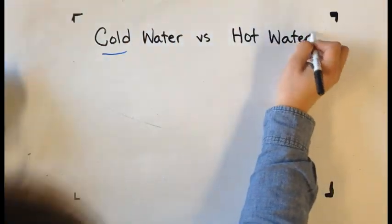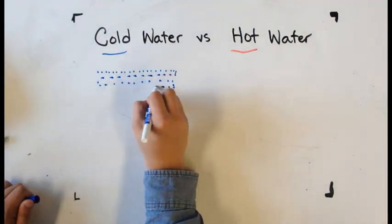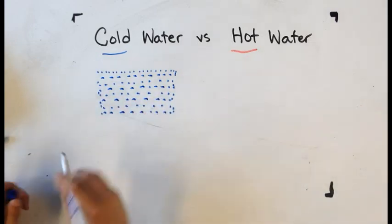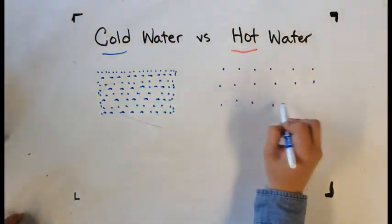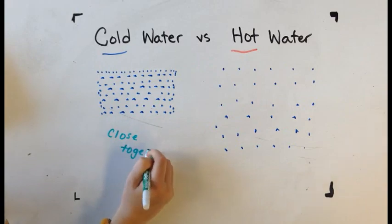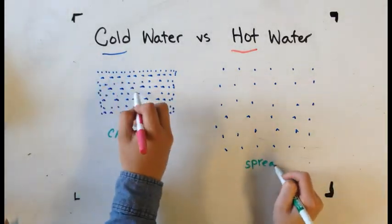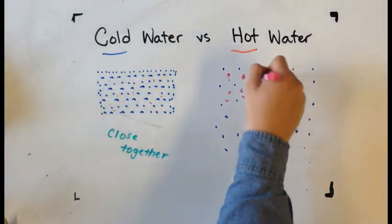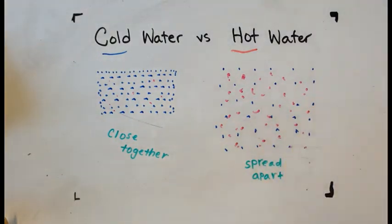The blue dots represent water molecules and the pink dots represent sugar molecules. As water gets hotter, space between molecules grows, allowing for more sugar to fit in between these molecules. This is why hot water works better to make rock candy instead of cold water.